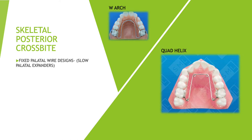If the crossbite is skeletal and we want a slow but stable expansion rather than rapid expansion, we have something called fixed palatal wire designs — the W-arch and the Quad Helix. These are the names of two appliances which are fixed and used for correcting posterior crossbite. Because they rest against the palate, we call them fixed palatal wire designs.